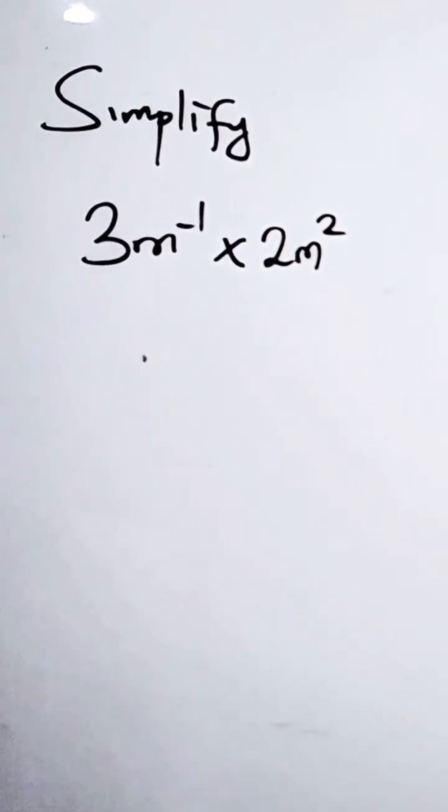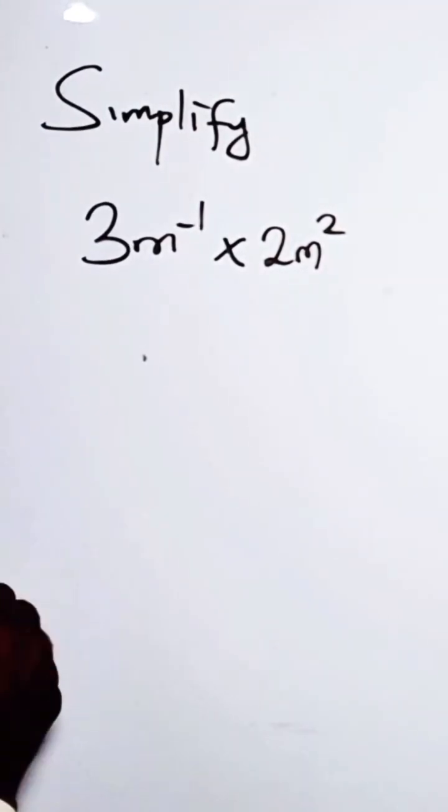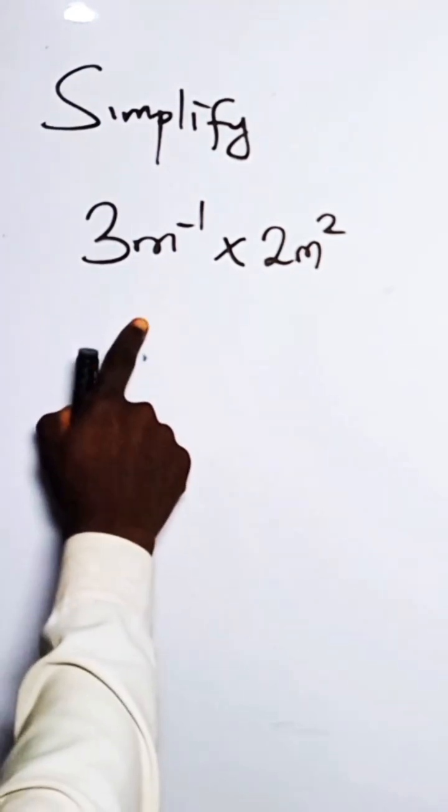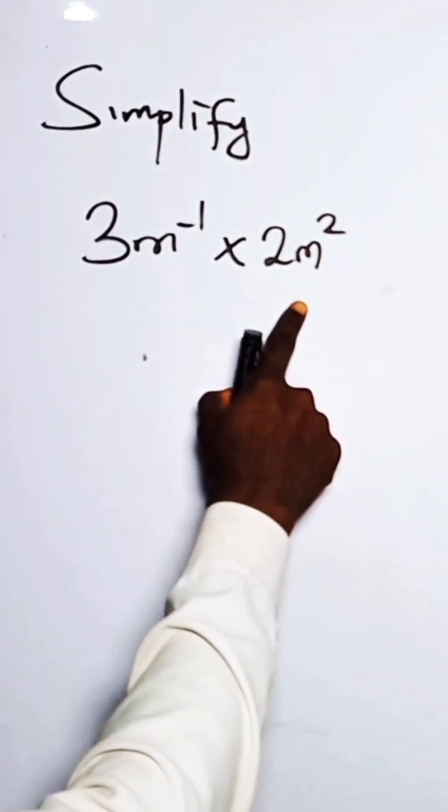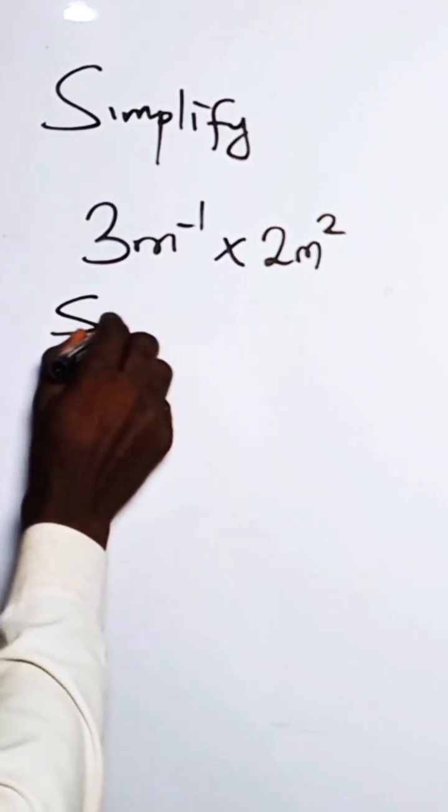The question says simplify this expression. So we have 3m raised to the power minus 1 times 2m raised to the square. So how do we do this? Solution.